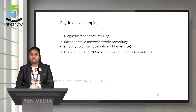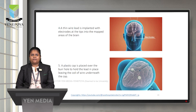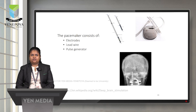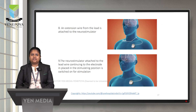Physiological mapping is performed using MRI. Intraoperative microelectrode recording is used for neurophysiological localization of the target site, along with microstimulation using DBS electrodes. In the fourth step, a thin wire lead with electrodes at the tip is implanted into the mapped brain areas. Fifth, a plastic cap is placed over the burr hole to hold the lead in place, leaving a coil of wire underneath the cap. Sixth, the scalp incision is closed with sutures and bandages. Seventh, a neurostimulator is placed underneath the skin near the collarbone — it is a small pacemaker consisting of an electrode, lead wire, and pulse generator. Eighth, an extension wire with the lead is attached to the neurostimulator, which is then switched on for stimulation.